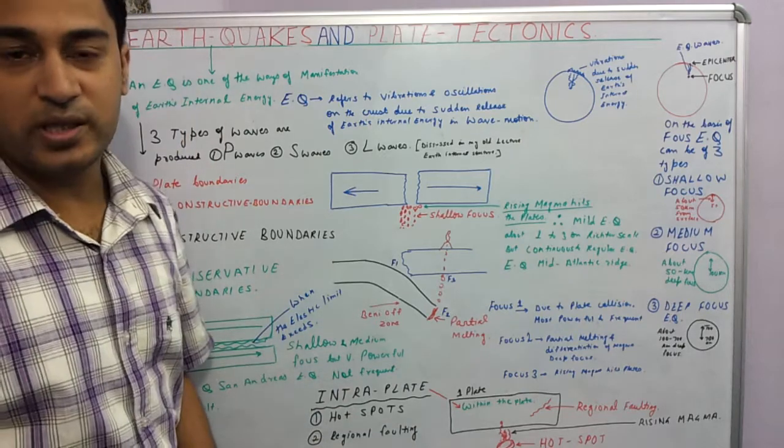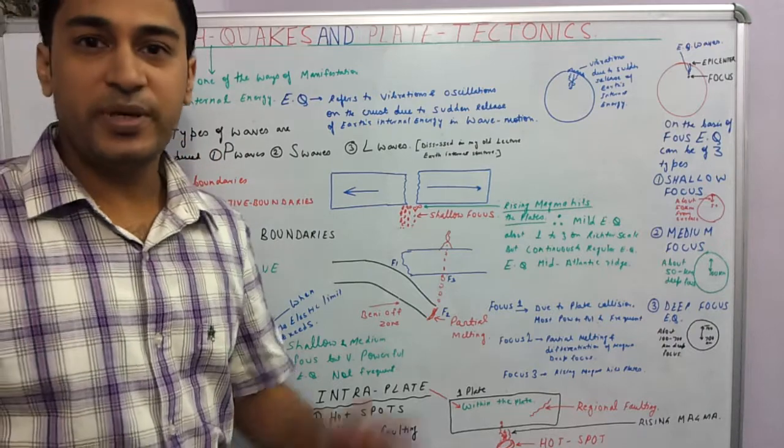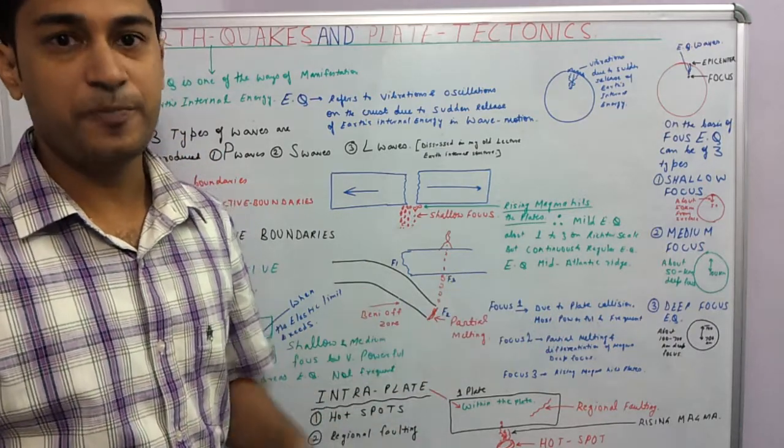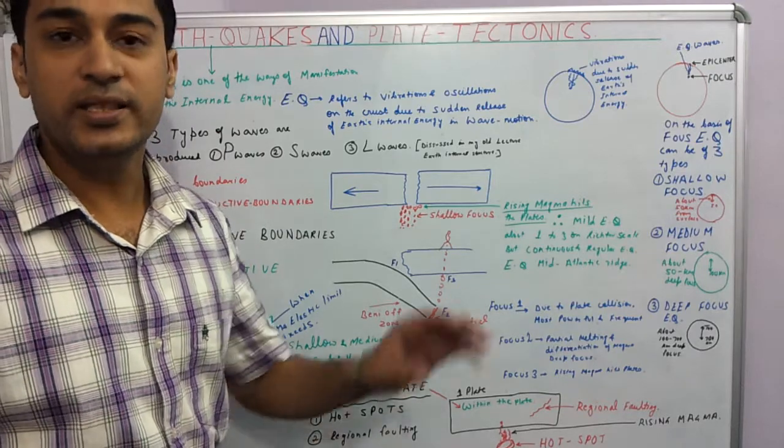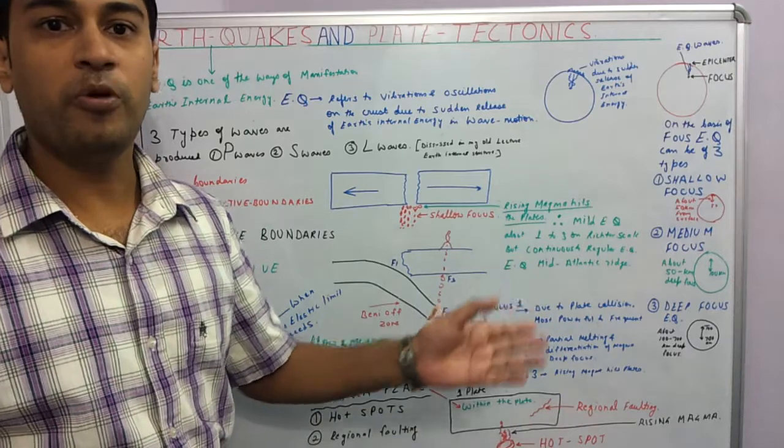Today I will discuss earthquakes with the help of plate tectonics. Earthquakes are basically one of the ways in which the Earth's internal energy is manifested, and this manifestation is in the form of vibrations and oscillations which comes out in the form of wave energy.